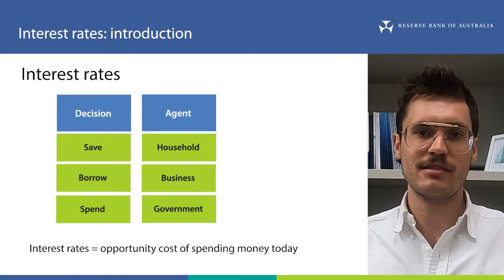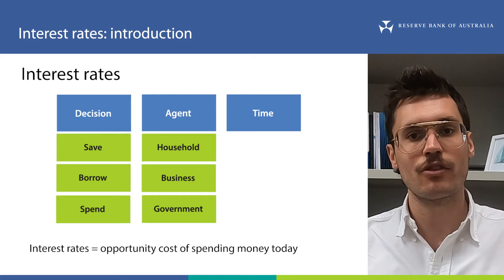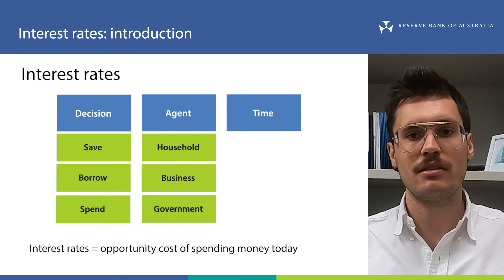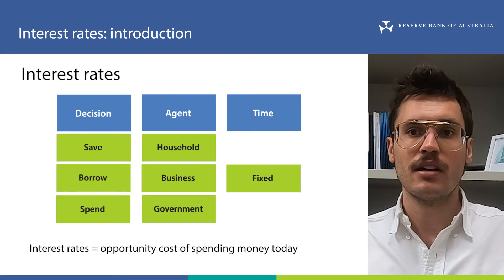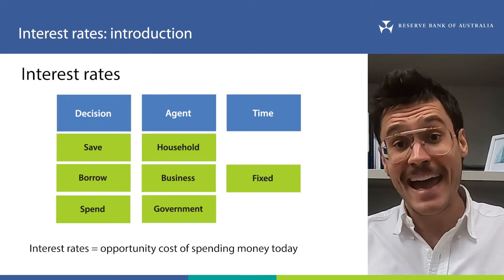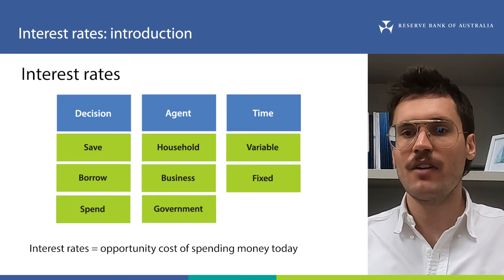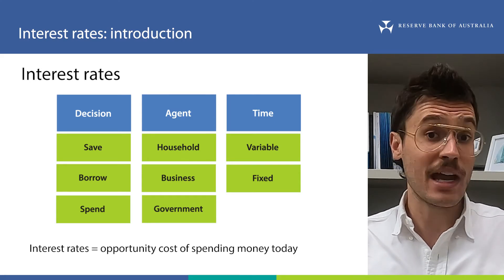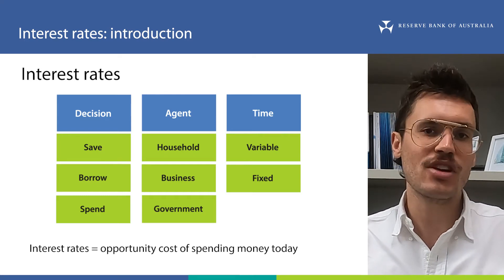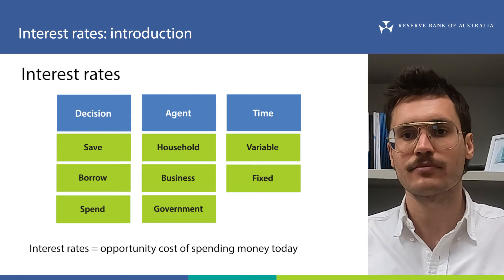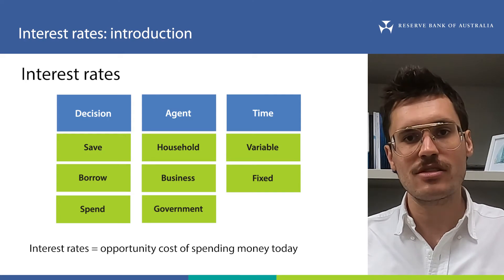A further element of interest rates is time. When agents choose to save or borrow, they can decide to lock in their interest rate for a period of time — three months, one year, ten years, or sometimes even longer. We call these interest rates fixed. Other interest rates change every day, or at least they can change every day. We call these interest rates variable. Another way to think about this is that variable interest rates are short term, because they can change every day. On the other hand, fixed interest rates are longer term, because they don't change after they're set until they expire. This is the framework that we'll use to think about interest rates: type of decision, agent, and time.